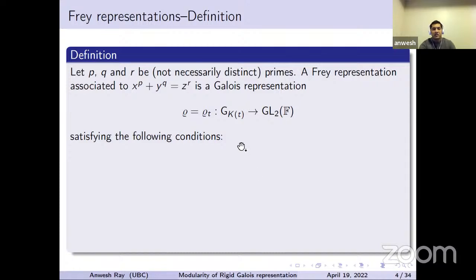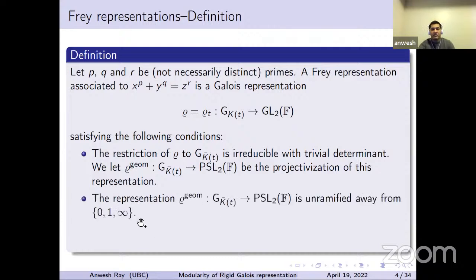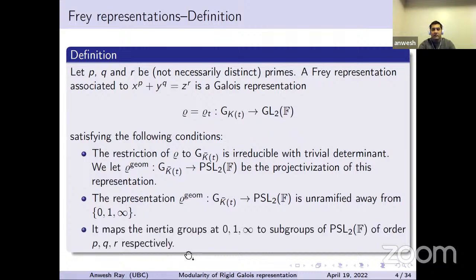This representation has to satisfy the following conditions. First, when we restrict rho to G(K-bar, T), it is irreducible and has trivial determinant, so we get a representation to SL_2(F). The geometric representation, denoted rho_geom, is simply the projectivization of this representation. Second, it is unramified away from 0, 1, infinity. Finally, the inertia groups at 0, 1, infinity map to subgroups of PSL_2(F) of orders P, Q, and R respectively — that is the dependence on these indices.